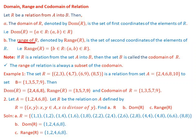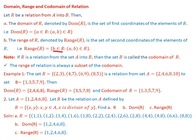The range of R, denoted Range(R), is the set of second coordinates of the elements of R. That is, the range of R is the set containing all b such that the ordered pair (a, b) is an element of R. Note that if R is a relation from set A into B, then the set B is called the co-domain of R.